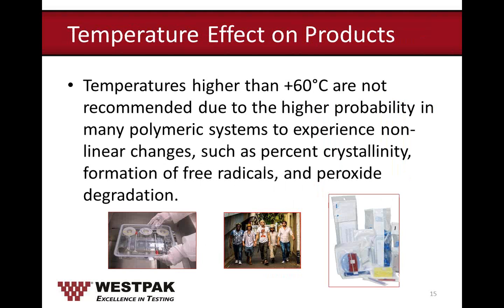According to ASTM F1980, temperatures higher than 60°C are not recommended because of the higher probability that many polymeric systems will experience non-linear changes, such as changes in percent crystallinity, formation of free radicals, and peroxide degradation — affecting materials like pouches and thermoform trays.